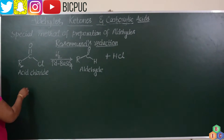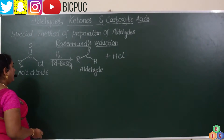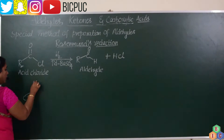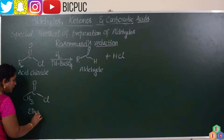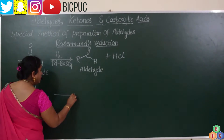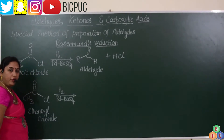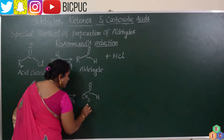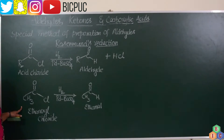Let us understand example cases. We can replace R with an alkyl group or aryl group. Replacing R with a methyl group gives CH3COCl. The name of this compound is acyl chloride; its IUPAC nomenclature is ethanoyl chloride. Ethanoyl chloride is reduced using palladium suspended over barium sulphate, and the product obtained is CH3CHO — ethanal. This is one example where we have replaced R with an alkyl group.